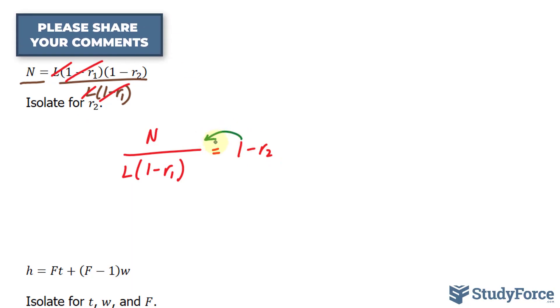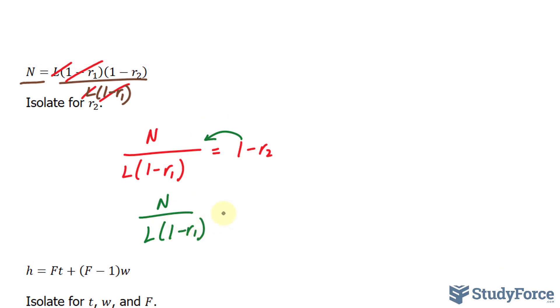I can bring this 1 over, we end up with N over L bracket 1 minus R sub 1 minus 1 is equal to negative R sub 2. We need to get rid of this negative, so we divide both sides by negative 1, divide this by negative 1, divide this by negative 1, and this by negative 1. On the right side, this has become positive R sub 2, which is exactly what we want. These terms become plus 1, and this becomes negative N over L 1 minus R sub 1, and feel free to put this negative at the top.